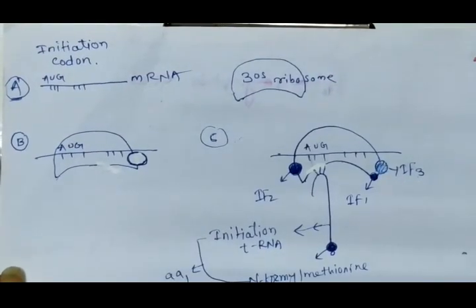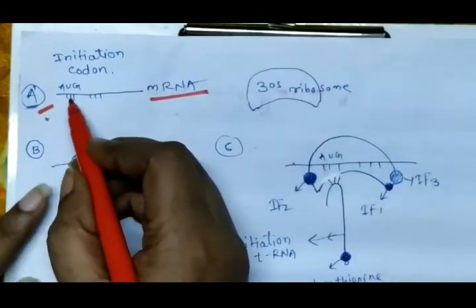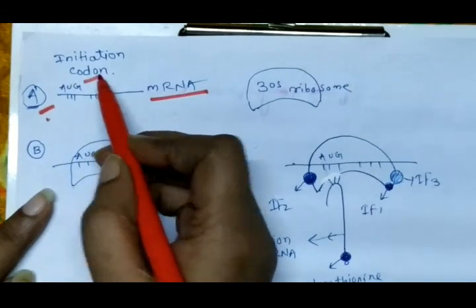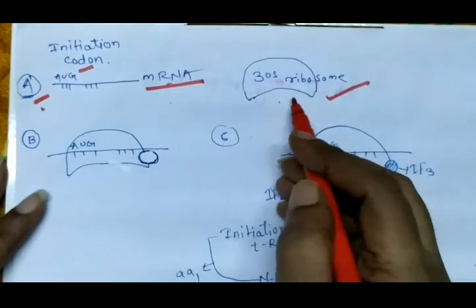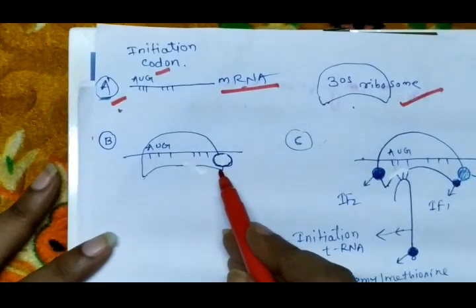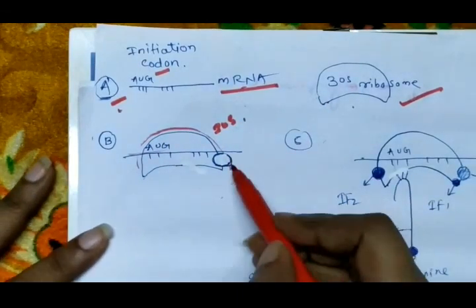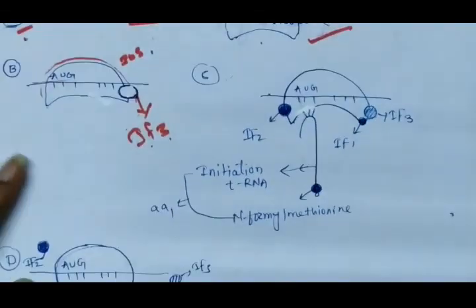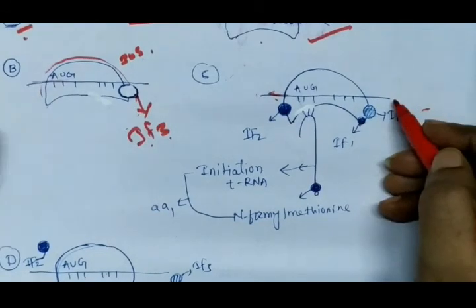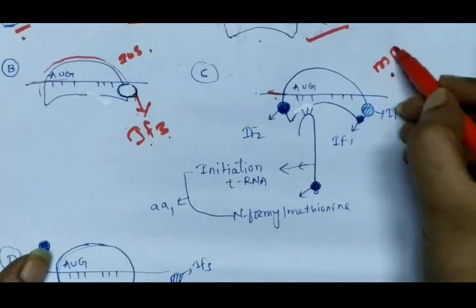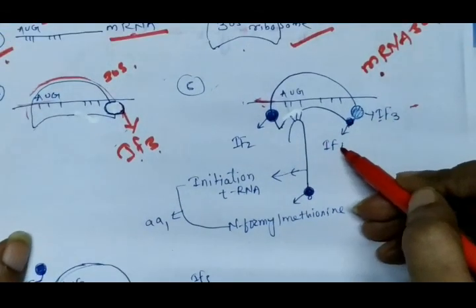Looking at the diagram: the mRNA structure contains the initiation codon AUG. The 30S ribosome subunit and the mRNA come together to form the mRNA–30S ribosome complex. The mRNA gets attached to the 30S ribosome subunit with the help of IF3. Both then associate with initiation factors IF2, IF3, and IF1.